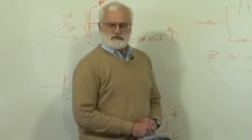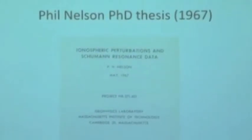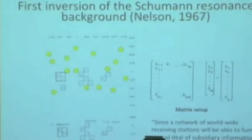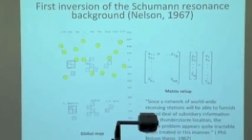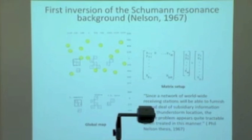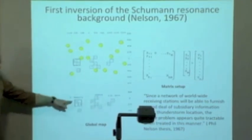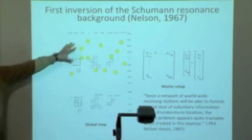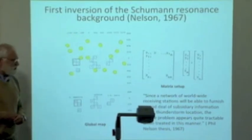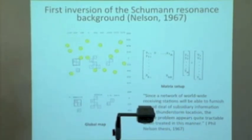The other important step was Phil Nelson. This is his thesis, 1967. He worked with a single vertical electrode in a radome at Millstone Hill near the farmhouse. The first suggestion that you might be able to use a network of stations worldwide to invert the data, invert the background observations, and get the global lightning activity. Here was a figure from his thesis showing the three chimneys, Americas, Africa, and Southeast Asia, 15 yellow receiving stations in hypothetical locations, showing that this was viable. Since a network of worldwide receiving stations will furnish subsidiary information about thunderstorm location, the source problem appears quite tractable when treated in this manner.